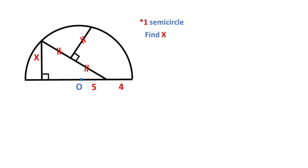Hello everyone. In this video we have one semicircle, where this length is given as 5 and here is given as 4, and these three parts are equal. x is asked.